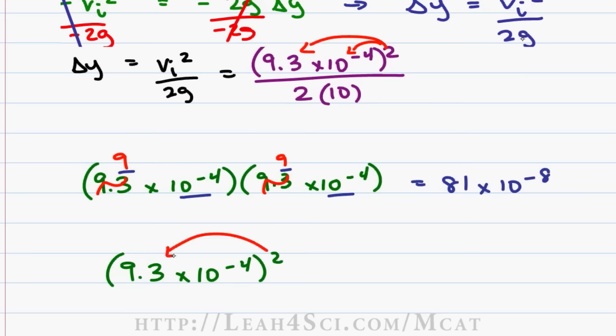If we square 9.3, we have 9 times 9 which is 81. For 10 to the minus 4 squared, since we're taking the power and raising it to a power, we multiply the numbers. Negative 4 times 2 is negative 8 so once again we get a simplified version of this number that is 81 times 10 to the minus 8. So let's continue.